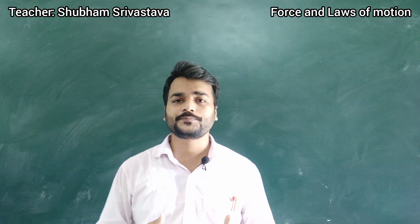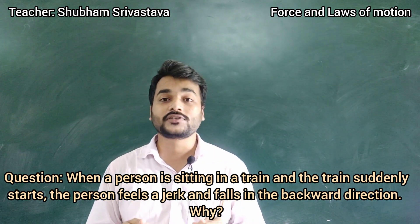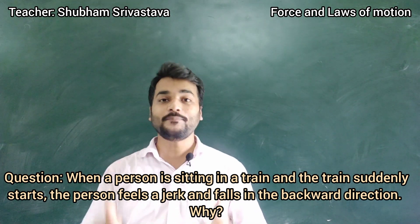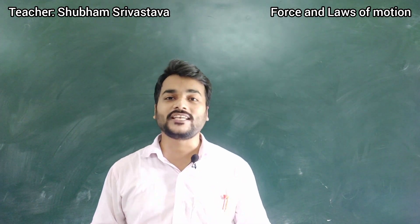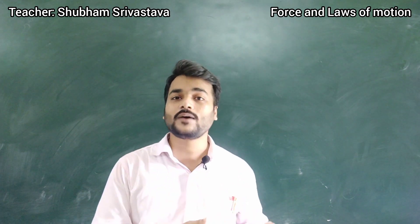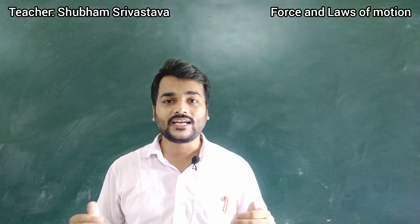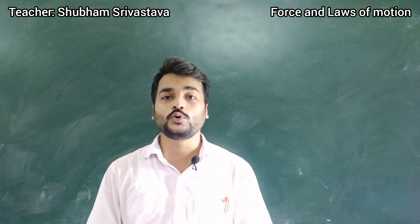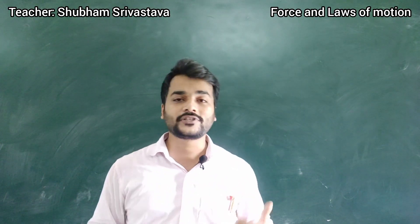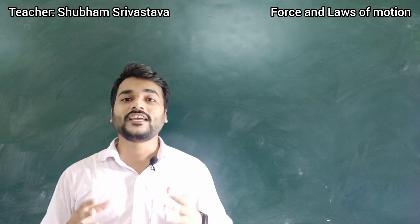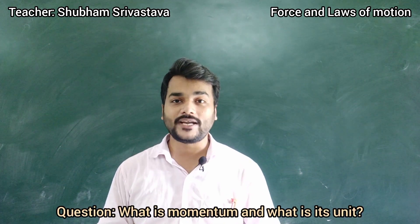A very similar question: when a person is sitting in a train and the train suddenly starts, the person feels a jerk and moves in the backward direction — why? This time the answer is inertia of rest. The body was initially at rest, so when the train suddenly moves forward, the body opposes the state of motion and tries to remain at rest, causing the person to move in the backward direction.